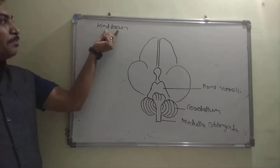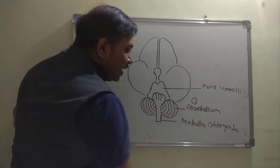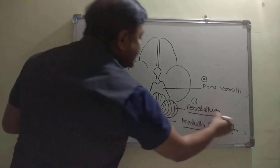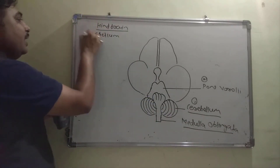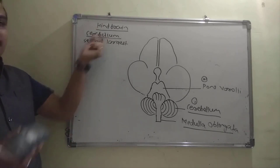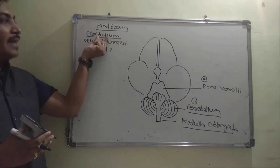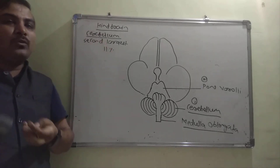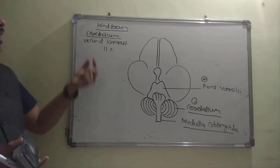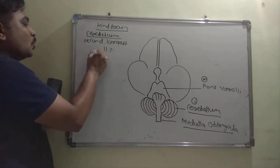Now the last part: the hindbrain. It is divided into three parts — cerebellum, pons varoli, and medulla oblongata. The cerebellum is the second largest part of the brain, forming approximately 11% of the brain's weight. The largest is the cerebrum (80–85%), so together these two form 90–95% of total brain weight.